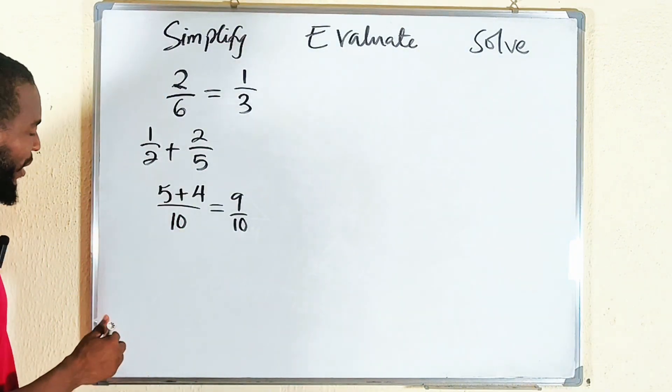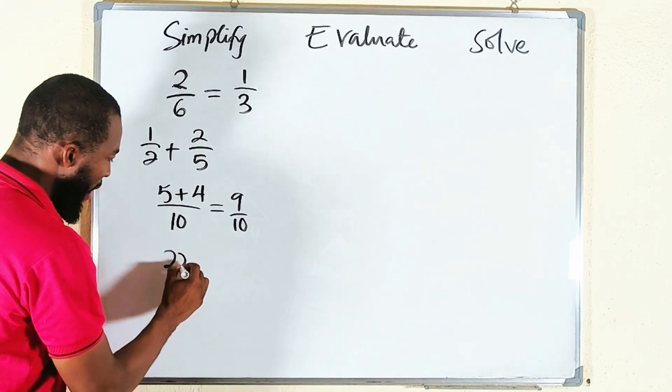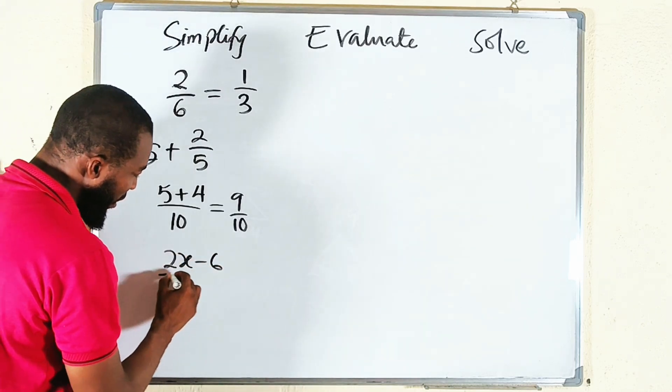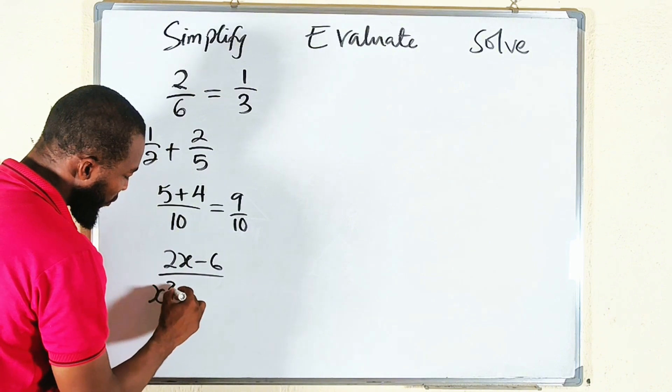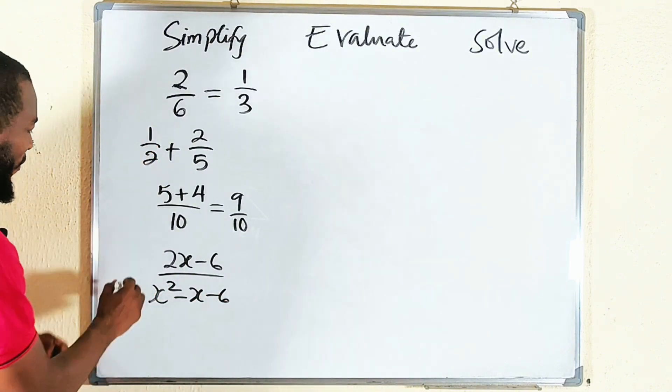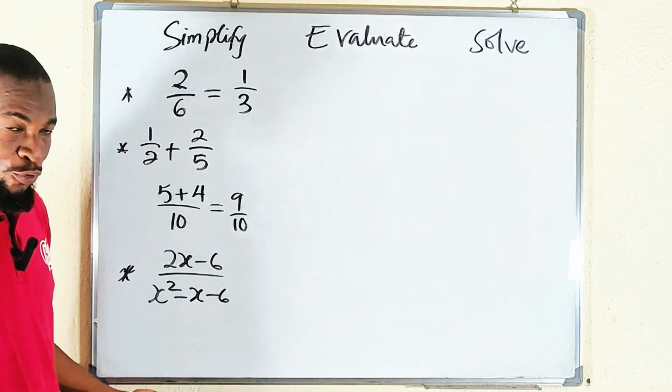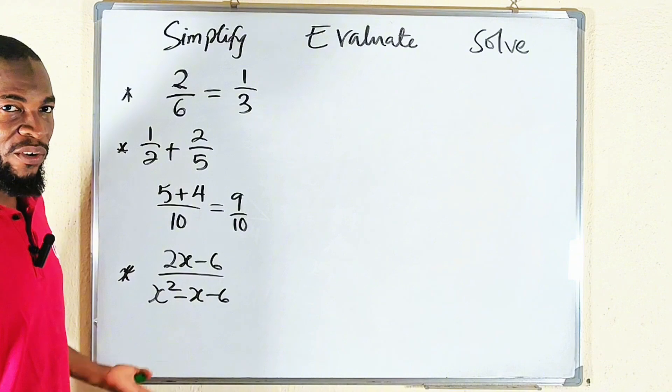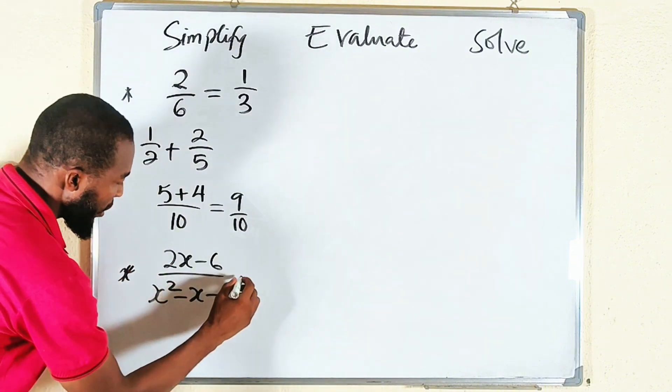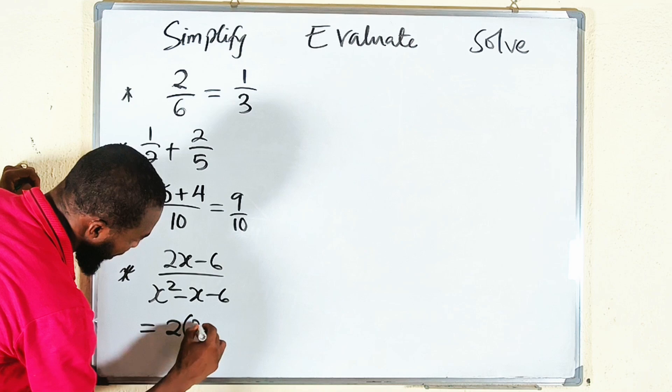Sometimes you may be given algebraic expressions to simplify. For example, let's assume we have 2x minus 6 divided by x squared minus x minus 6, something like this. If your teacher asks you to simplify this, what can you do? I think you can factorize the top and factorize the bottom. The top, I have 2 in common, inside I have x minus 3.